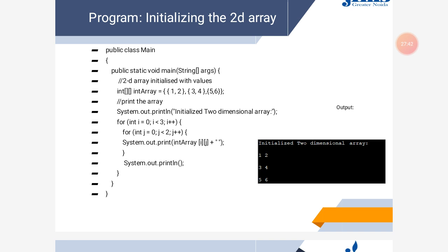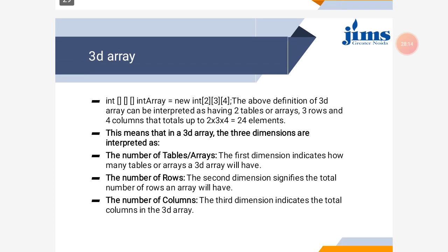In this example, we are using an array which has three different tuples in curly braces. It declares three rows, and in every row there are two elements. Similarly, just as we can have two-dimensional arrays, we can have any dimensional array.